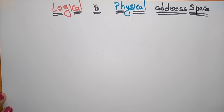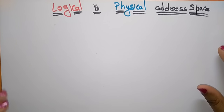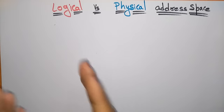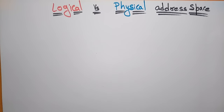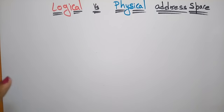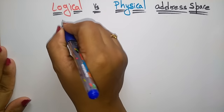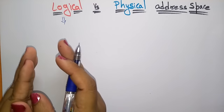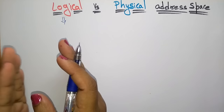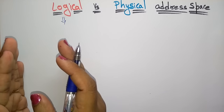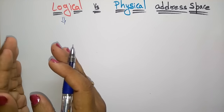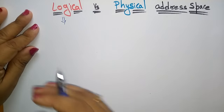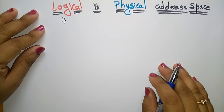Hi students, welcome back. The next topic in the subject Operating Systems is logical versus physical address space. What do you mean by logical address space and what do you mean by physical address space? Whenever you see the name 'logical', you have to think that this is the address space generated by the CPU only — the CPU will generate the logical address space.